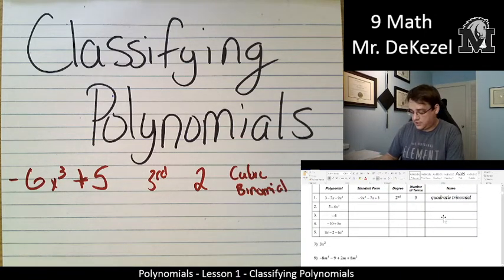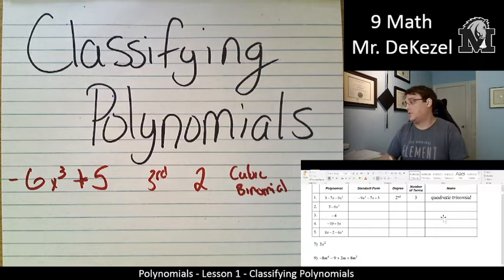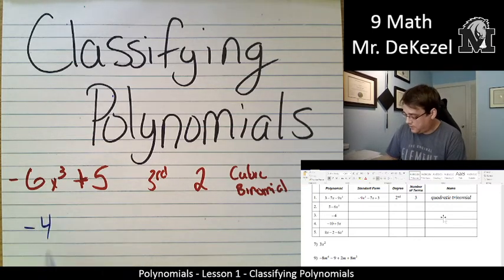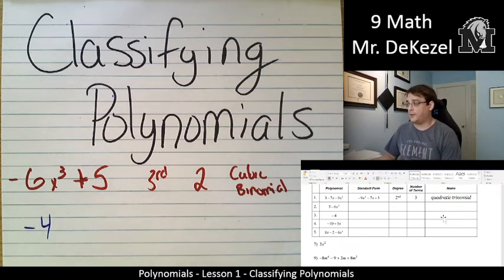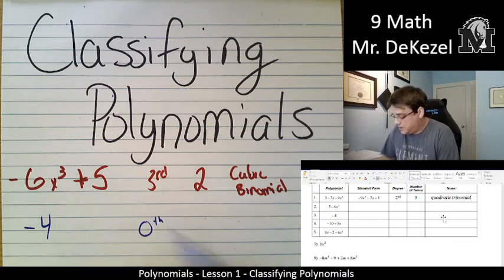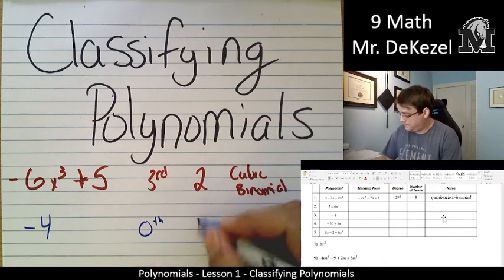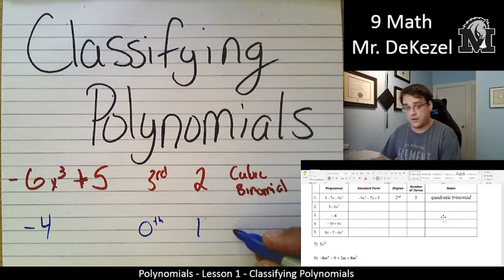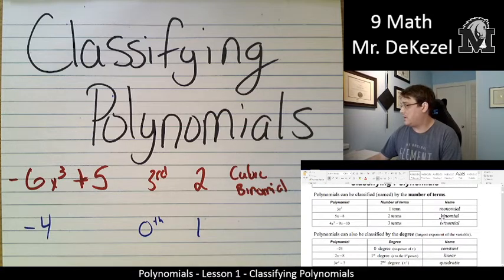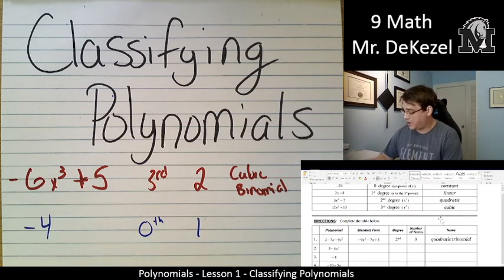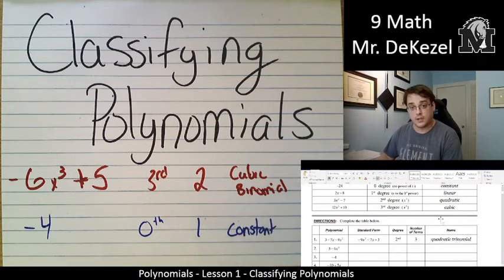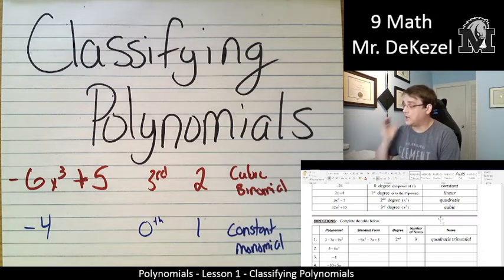Let's do the next one. We just have -4, so it's already in standard form. It doesn't have any variables, so that would be 0th degree. And it's only one term, so it's just a monomial, a constant monomial. It is okay to check back to see what it should be called. We will get super familiar with these.